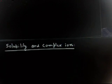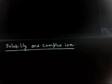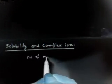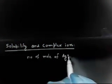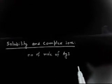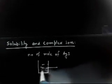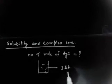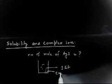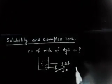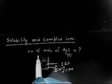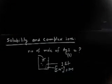Let us discuss this problem. This is again solubility in the presence of complex ion formation. The question says: determine the number of moles of AgI which may be dissolved. We have to find the number of moles of AgI that will be dissolved in one liter solution. The solution contains CN⁻ at a concentration of 1 M. AgI is solid, and we need to find how many moles will dissolve.